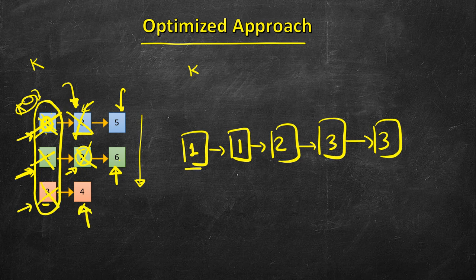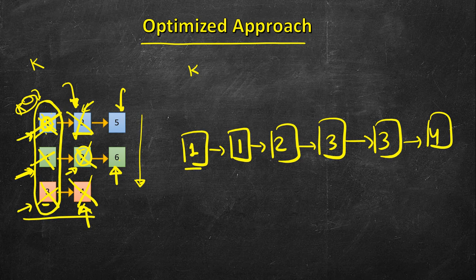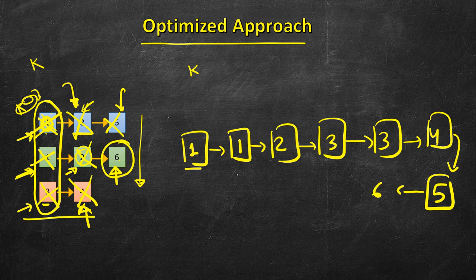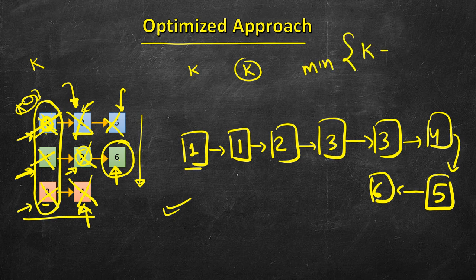This continues until some lists become empty. Once a list is exhausted, we compare among fewer keys. Eventually we end up comparing just two values like 5 and 6, pick 5, then finally 6 is the only one left. The main thing we need here is a way of efficiently comparing K different keys to always pick the minimum.